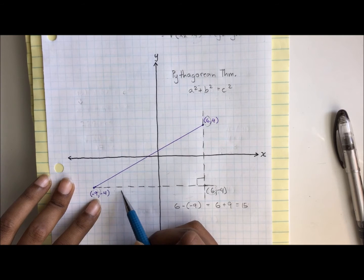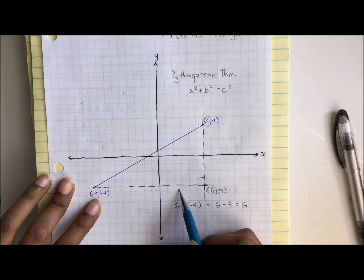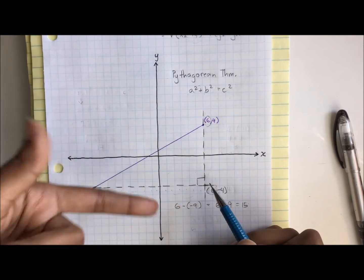1, 2, 3, 4, 5, 6, 7, 8, 9, 10, 11, 12, 13, 14, 15. All right, it worked.